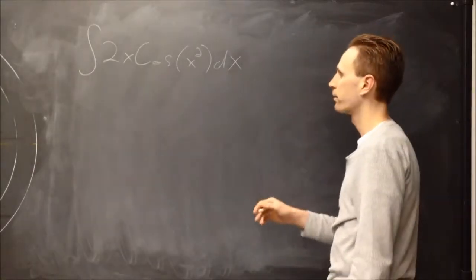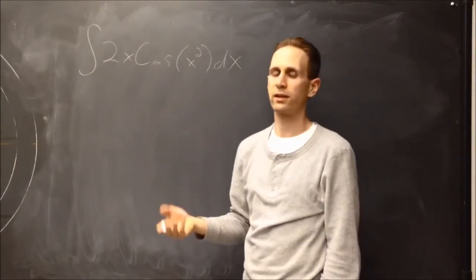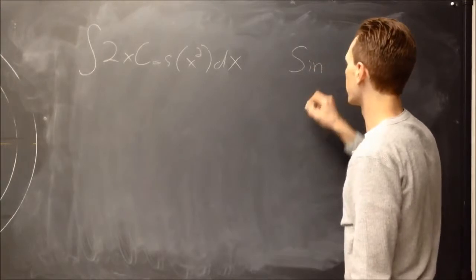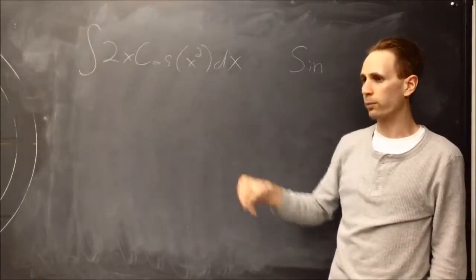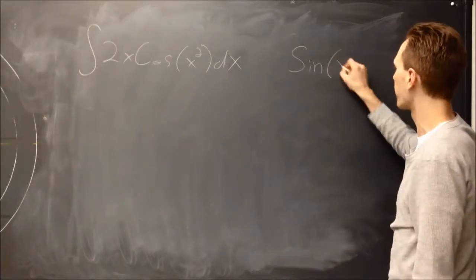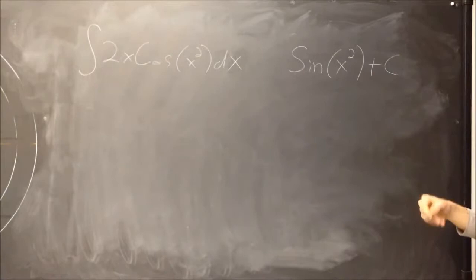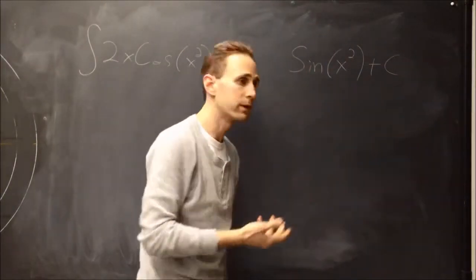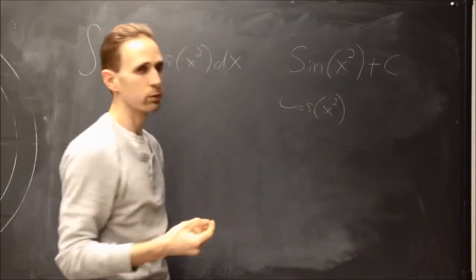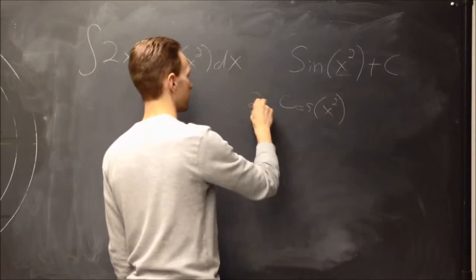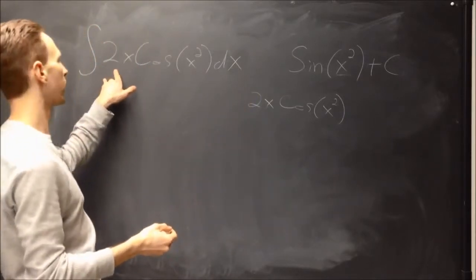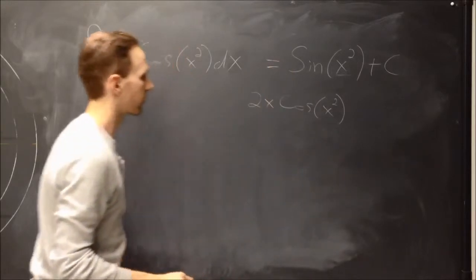First, let's try this with just a bit of guesswork. There's a cosine in it, so the answer is probably going to have a sine in it, because sine differentiates to cosine. But sine of what? Since there's an x² in here, let's just try sine of x² plus c. To verify, differentiate: the derivative of sine(x²) is cosine(x²), and by the chain rule, multiply by the derivative of the inside, which is 2x. So the anti-derivative of 2x·cos(x²) is indeed sin(x²) + c.